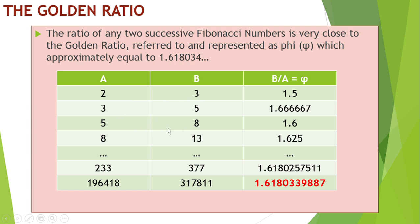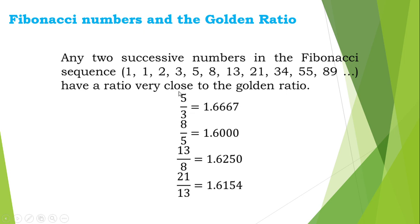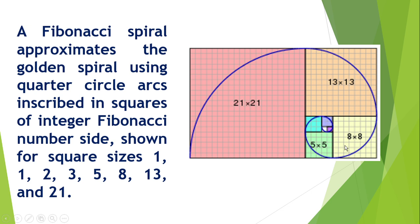Any two successive numbers in the Fibonacci sequence - one, one, two, three, five, eight, thirteen, and so on - are very close to the value of the golden ratio. Five over three is 1.667, eight over five is 1.6, thirteen by eight is 1.625, twenty-one over thirteen is 1.6154. When we check: eight plus five is thirteen, eight plus thirteen is twenty-one. This is the spiral of Fibonacci.